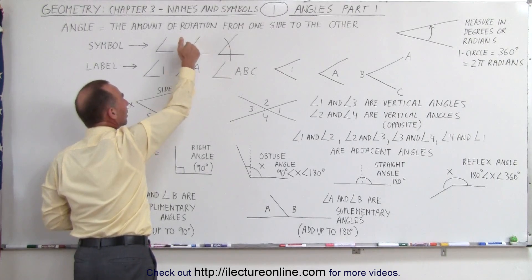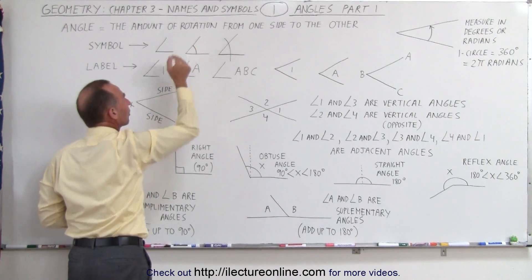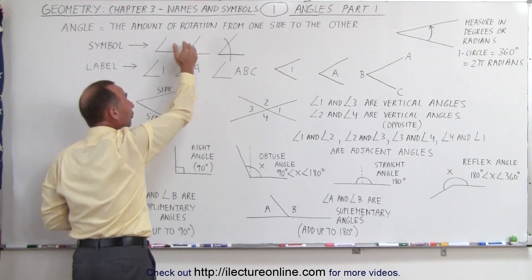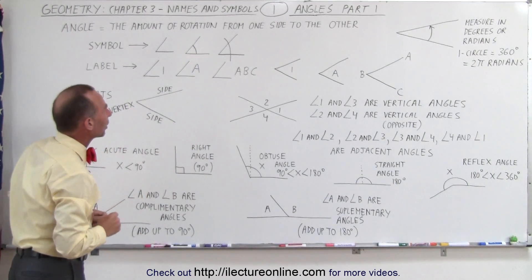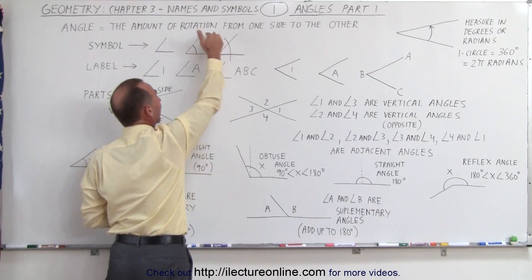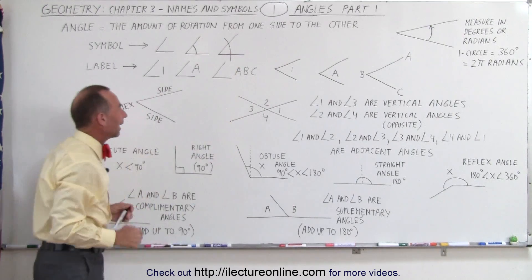Sometimes we symbolize it with a little arch in between the two sides. Sometimes we use one arch, two arches, or three arches, depending upon how we want to compare angles to one another. And sometimes we simply draw a curved line through the two sides like that.